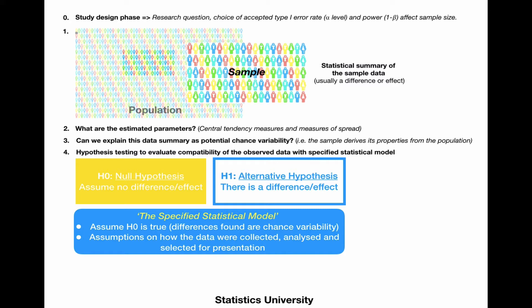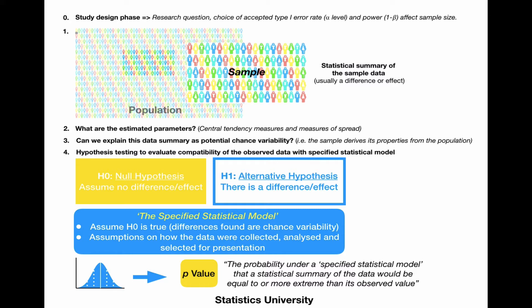But we also assume certain other things that are less often specified, like how the data were collected, analyzed, and selected for presentation. Using this information, we calculate a p-value. That p-value is defined as the probability under our specified statistical model that a statistical summary of the data would be equal to or more extreme than its observed value in the study.